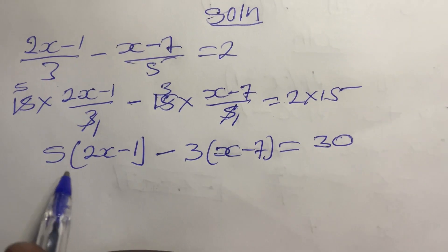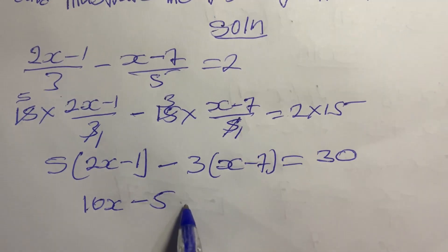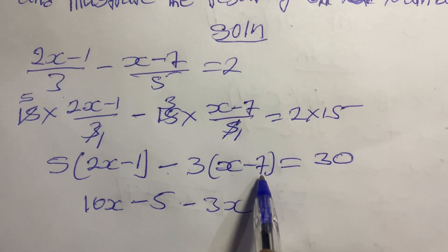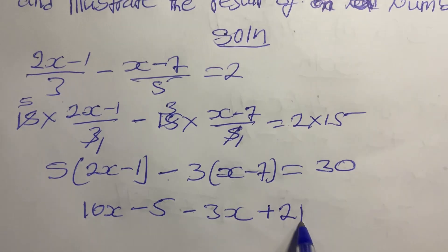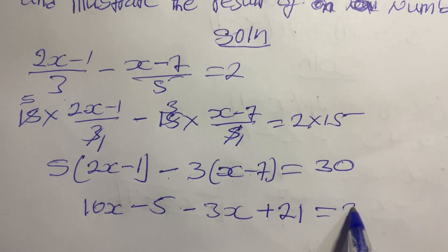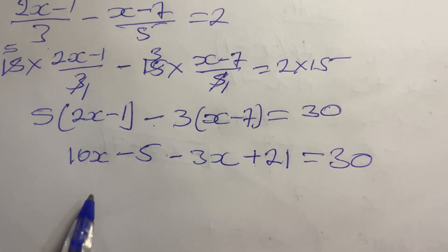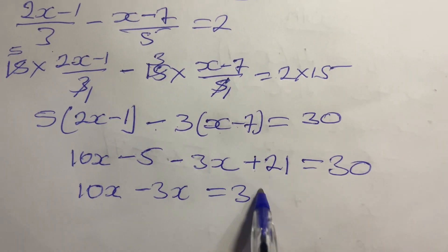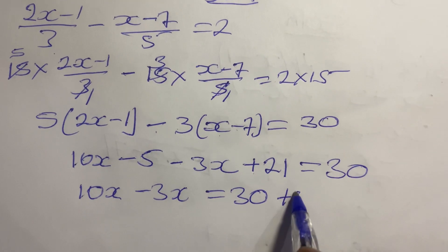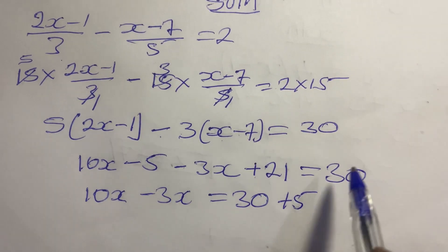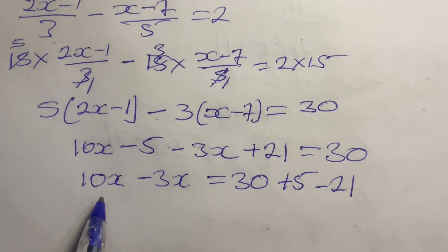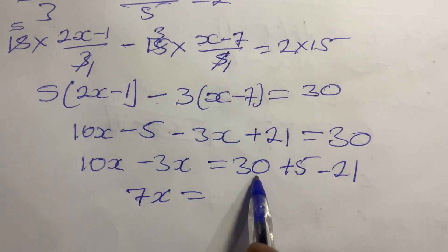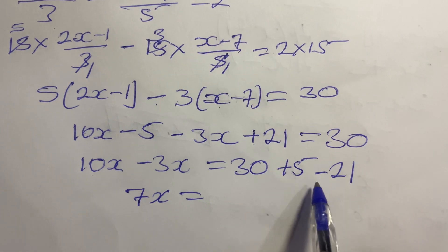Expand the brackets: 5 times 2x gives 10x, 5 times negative 1 gives negative 5. Then negative 3 times x gives negative 3x, and negative 3 times negative 7 gives positive 21. So we have 10x minus 5 minus 3x plus 21 equals 30. Grouping like terms: 10x minus 3x gives 7x. Moving negative 5 across gives positive 5, and moving positive 21 across gives negative 21. So 7x equals 30 plus 5 minus 21, which is 14.